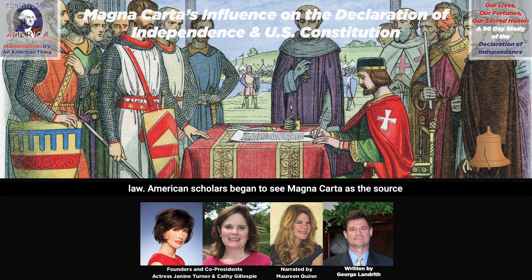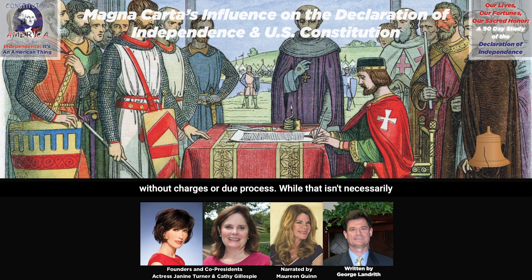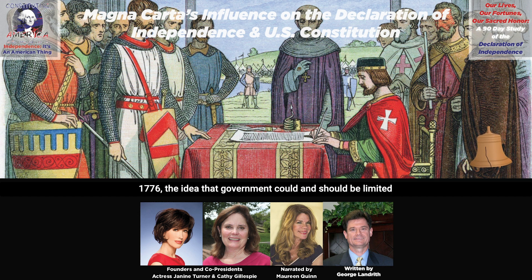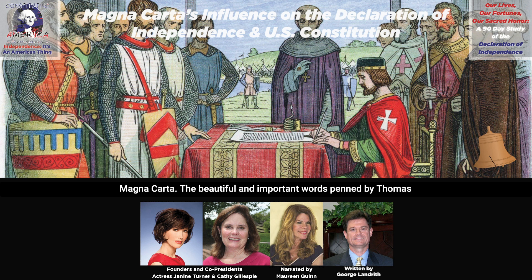American scholars began to see Magna Carta as the source of their guaranteed rights of trial by jury and habeas corpus, which prevented a king from simply locking up his enemies without charges or due process. While that isn't necessarily correct history, it is part of the growth of the seed of freedom and liberty that Magna Carta planted. By July 4, 1776, the idea that government could and should be limited by the consent of its citizens and that government must protect individual rights was widely seen as springing forth from Magna Carta.